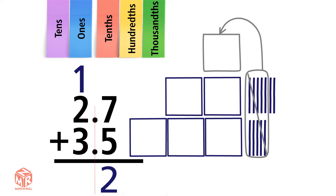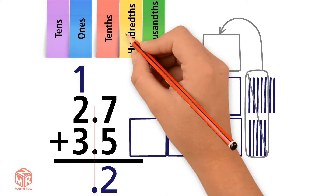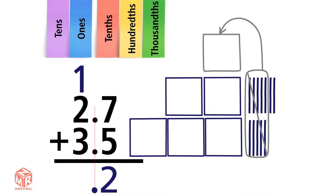We bring down the decimal point. Now add the ones. 1 plus 2 plus 3 equals 6. So 2.7 plus 3.5 equals 6.2.